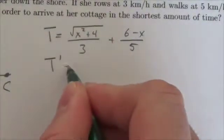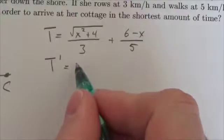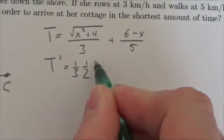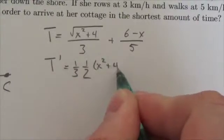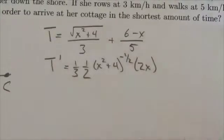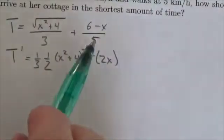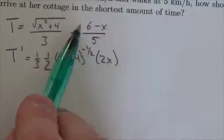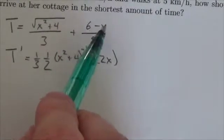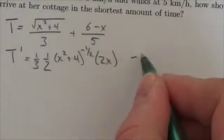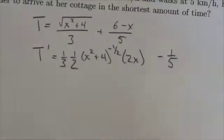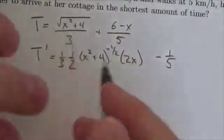So T prime is going to equal, in this case here we've got the one-third and then we're going to bring down a one-half and this will be X squared plus four to the negative one-half times two X. Now over here I'm going to distribute the five to both of those terms here, so the six-fifths when I take the derivative will be zero, but the negative X over five, that's going to give me negative one-fifth.